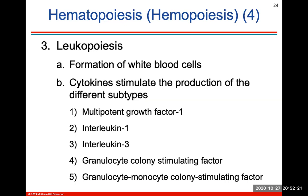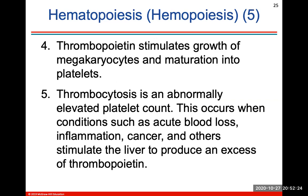Leukopoiesis is the formation of white blood cells. Thrombopoietin stimulates the growth of megakaryocytes and their maturation into platelets. Thrombocytosis is an abnormally elevated platelet count, occurring when conditions such as acute blood loss, inflammation, and cancer stimulate the liver to produce excess thrombopoietin.